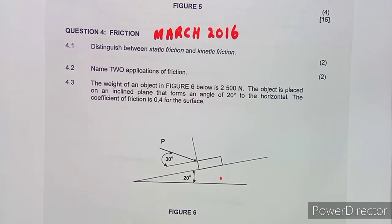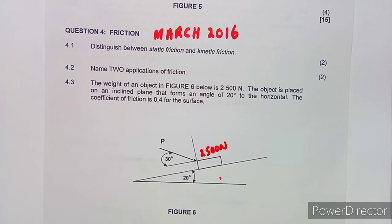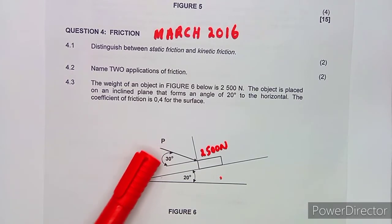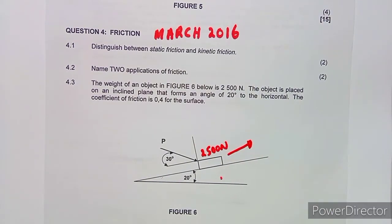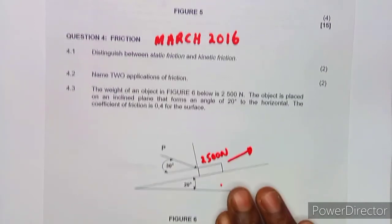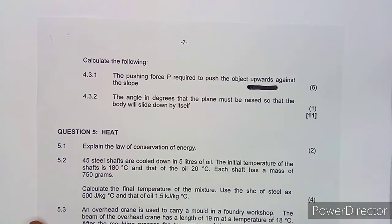Question 4.3 — we are given a diagram. The weight of an object is 2500 newtons. The object is placed on an inclined plane that forms an angle of 20 degrees to the horizontal. We are given the coefficient of friction. There is a force P pushing the object up the slope. Calculate the pushing force P required to push the object upwards against the slope.